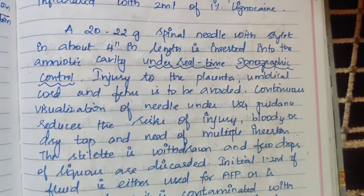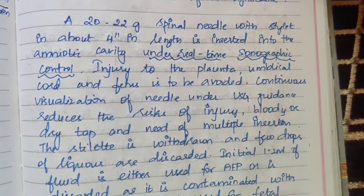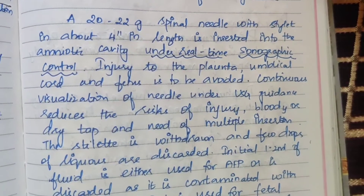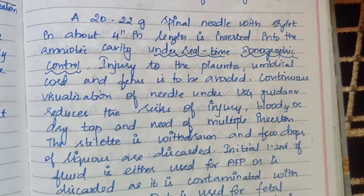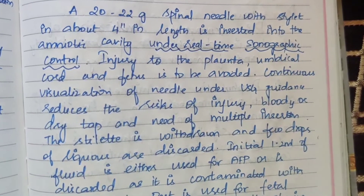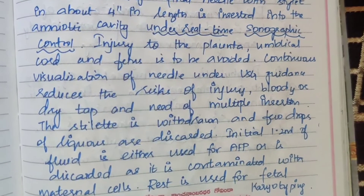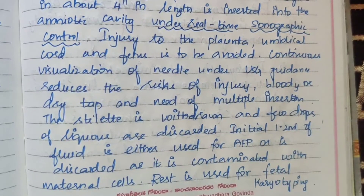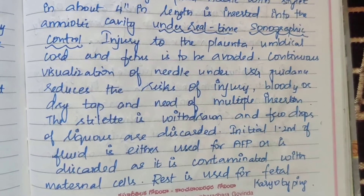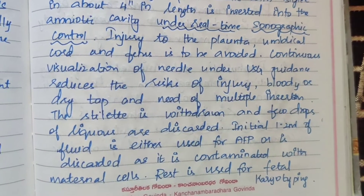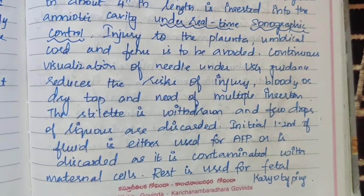A 20-22 gauge spinal needle with stilette, about 4 inches in length, is inserted into the amniotic cavity under real-time sonographic control. This is to avoid injury to the placenta, umbilical cord, and fetus. Continuous visualization of the needle under USG guidance reduces the risk of bloody tap and the need for multiple insertions. The stilette is then withdrawn and the first few drops of liquor are discarded.